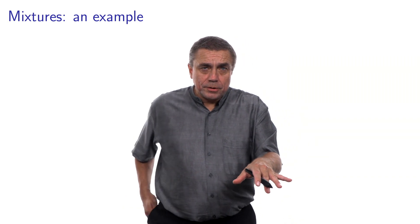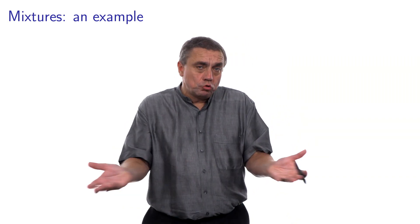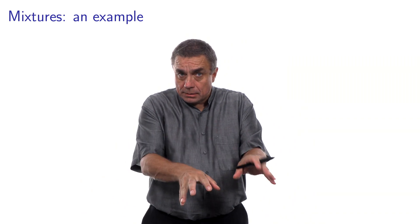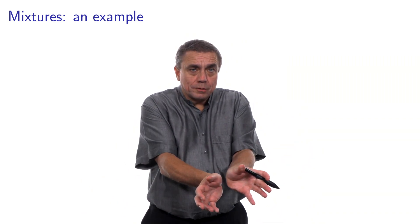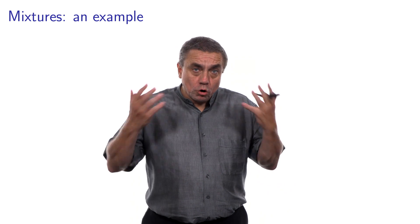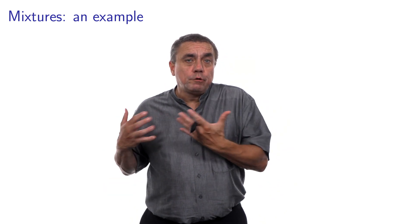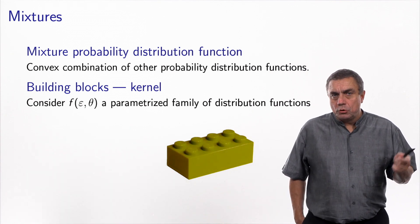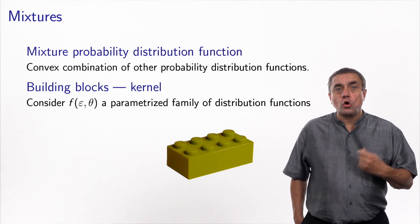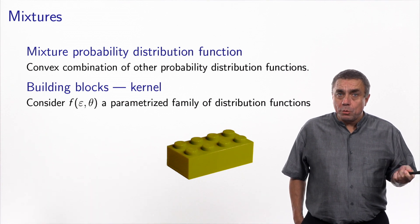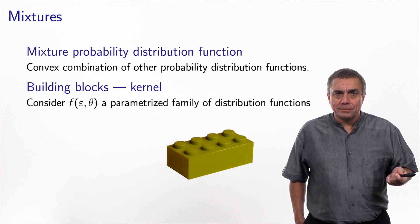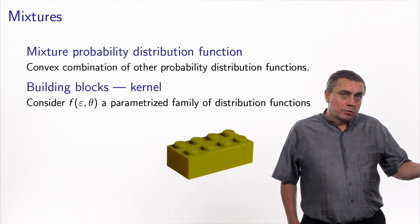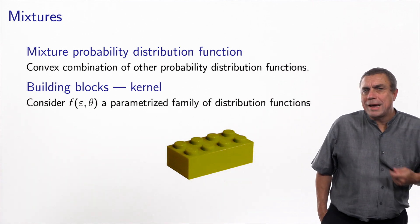So you see the idea: I take two simple things — two normal distributions in this case — I combine them via a convex combination, and I obtain something more complex that hopefully will fulfill my modeling needs. This is called a mixture probability distribution function: a convex combination of other probability distribution functions. The building blocks — in my example they were normal distributions — I usually call the kernel.